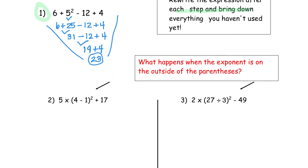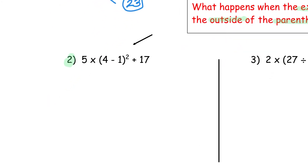Now let's take a look at problem number two. What happens when the exponent is on the outside of the parentheses? We have five times four minus one to the second power, and notice I do have an exponent on the outside, and then I add 17. I'm going to follow the rules of the Order of Operations — I like to write them down as a reminder. Parentheses: yes, four minus one is three. I have to bring that two along because I'm not done yet.